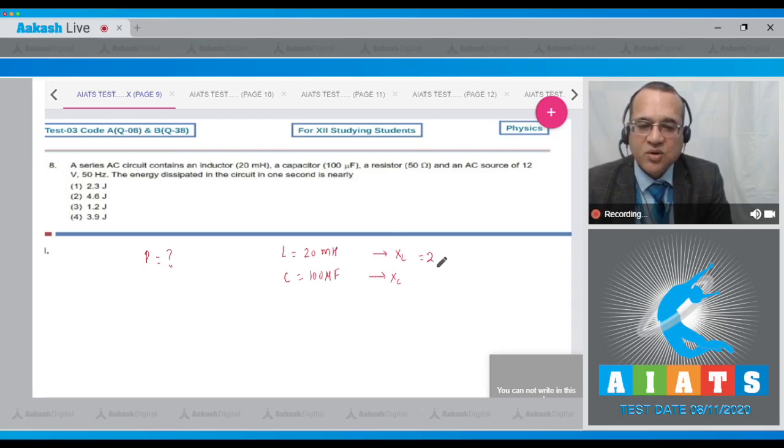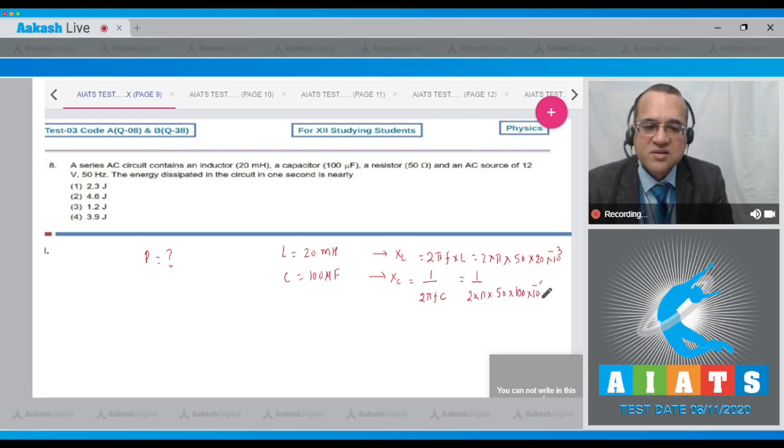And XL is equal to 2 pi, the frequency into L. So 2 into pi into frequency, the frequency is given 50, and L is given 20 into 10 to the power minus 3. So this we have to solve. And then XC is equal to 1 upon omega C. Omega is this, so 1 upon 2 into pi, the frequency was 50 and this is 100 microfarad, so 100 into 10 to the power minus 6.